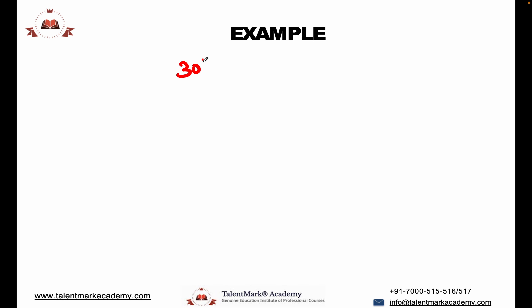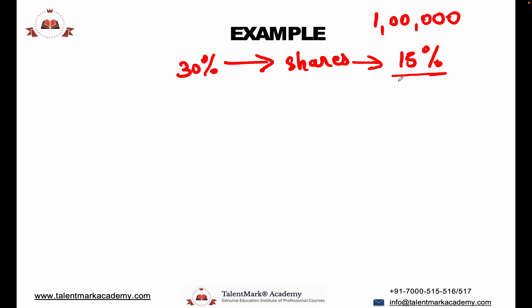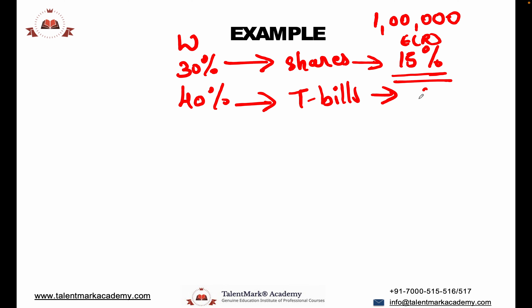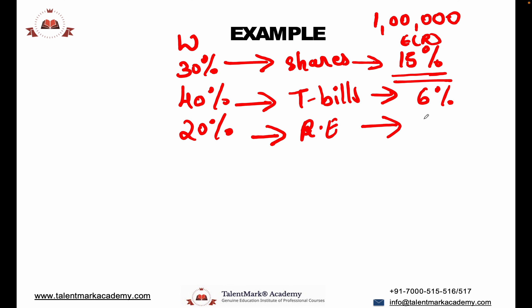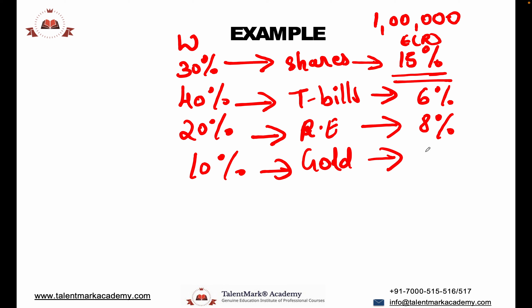Let's take one example. Suppose we have a portfolio worth 1 lakh. We have 30% invested in shares with an expected return. 40% of our investment is in T-bills with approximately 6% expected return. 20% is in real estate with approximately 8% return. And 10% is in gold with approximately 9% return.